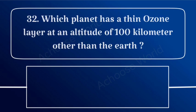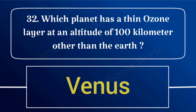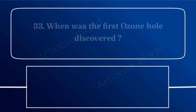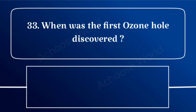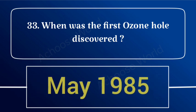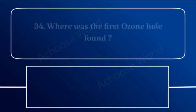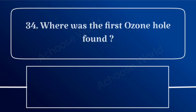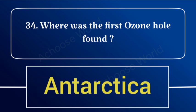Which planet has a thin ozone layer at an altitude of 100 km other than Earth? Venus. When was the first ozone hole discovered? May 1985. Where was the first ozone hole found? Antarctica.